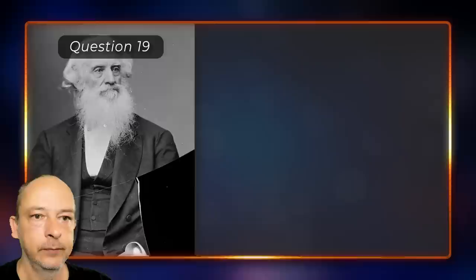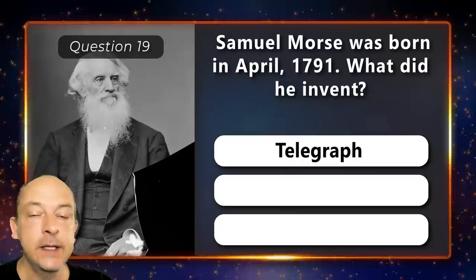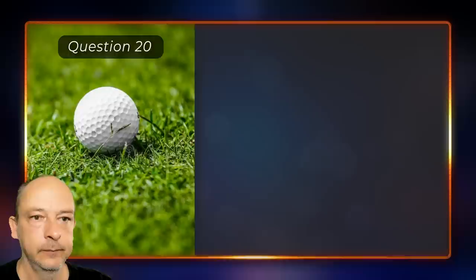Samuel Morse was born in April 1791. What did he invent — the telegraph, the telephone, or the television? He invented the telegraph.